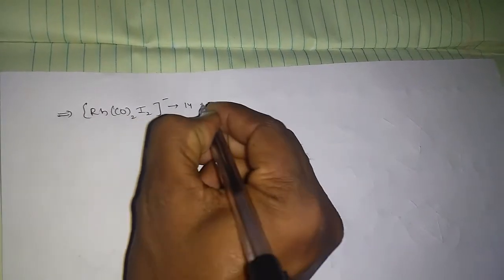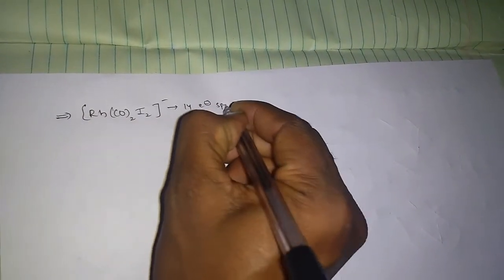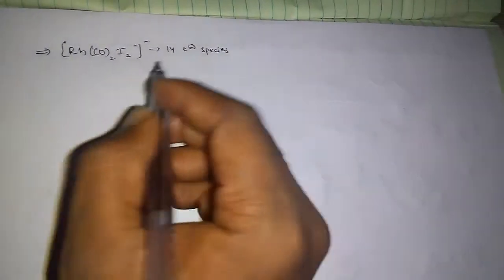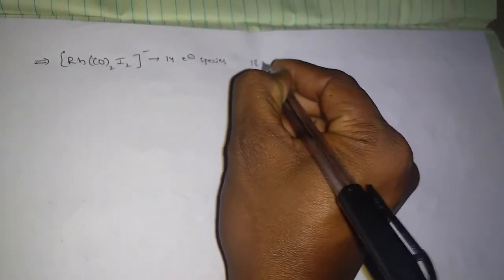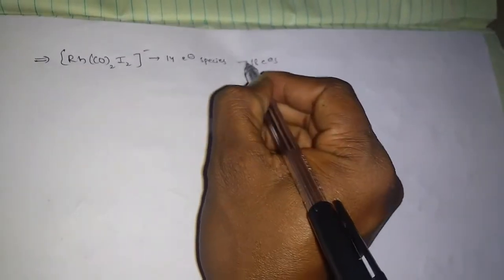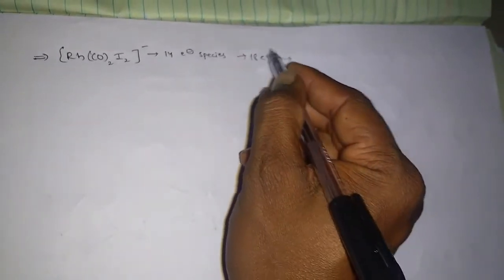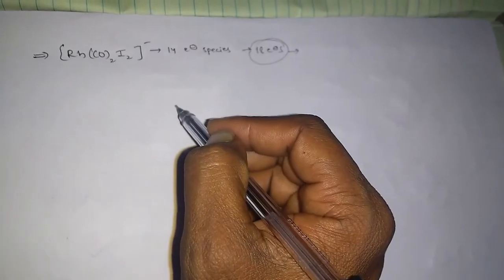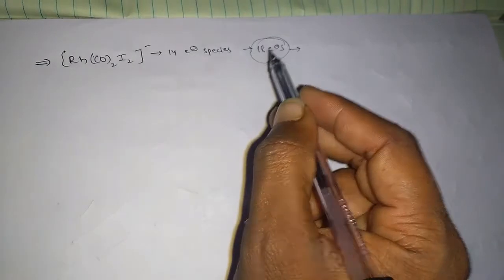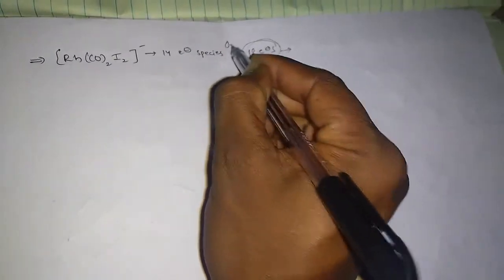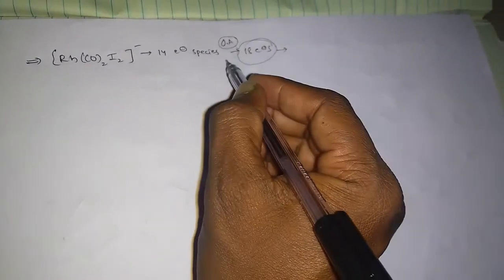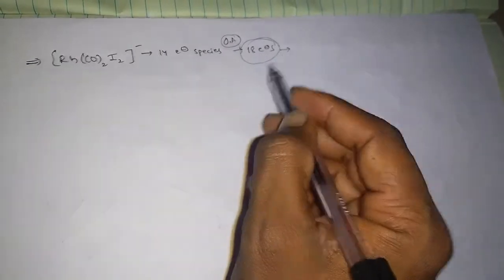This is a 14-electron species. By oxidative addition, it tries to get 18 electrons, which is the stable electron configuration. So this rhodium complex, being a 14-electron species, undergoes oxidative addition to reach 18 electrons.